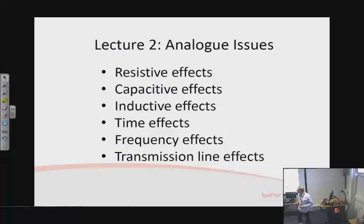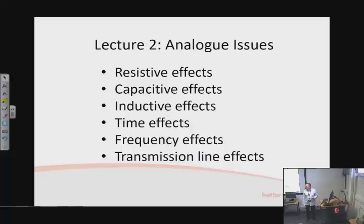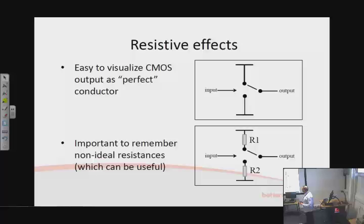The main points to cover are: resistive, capacitive, and inductive effects that you might not normally think about in a perfect digital circuit. There are also effects due to how fast electrons travel, the frequency at which circuits are switched on and off, and transmission line effects — a combination of all these — which I'll describe.